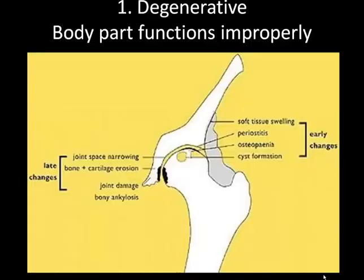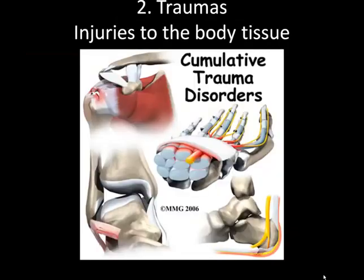The first category is degenerative. This is when some body part functions improperly. It can be due to age, wear and tear, or something's just not working right — maybe the cells did not divide appropriately and there's some mistake with that.